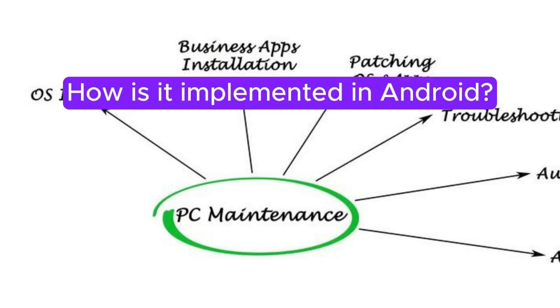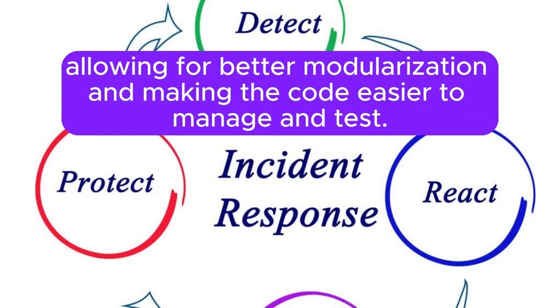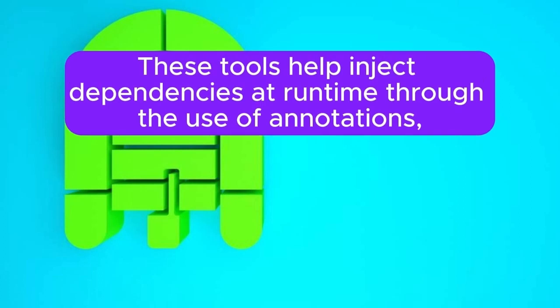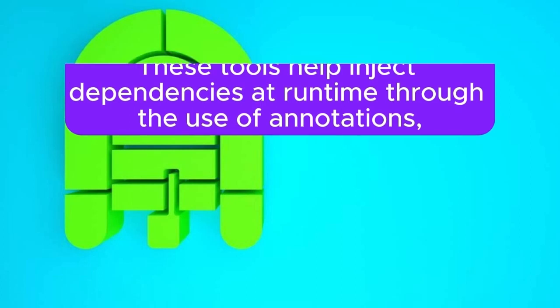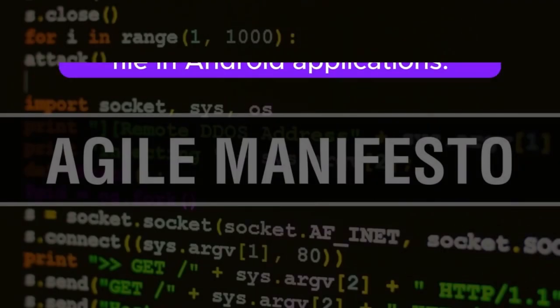Question 15: What is Dependency Injection and how is it implemented in Android? Dependency Injection (DI) is a design pattern used to implement Inversion of Control (IoC), allowing for better modularization and making code easier to manage and test. In Android, DI can be implemented using frameworks like Dagger 2, Hilt, or Koin. These tools inject dependencies at runtime through the use of annotations, thereby decoupling dependency creation from business logic.